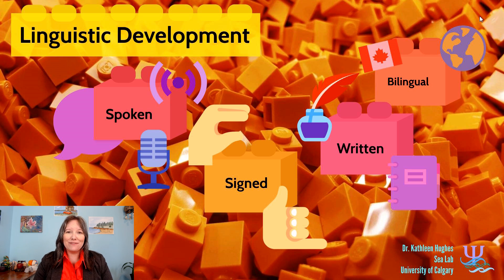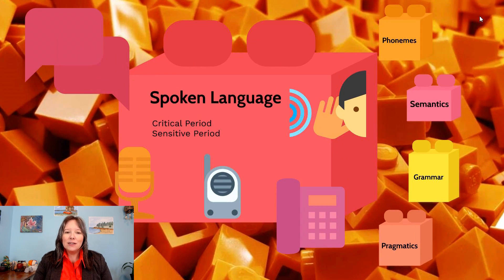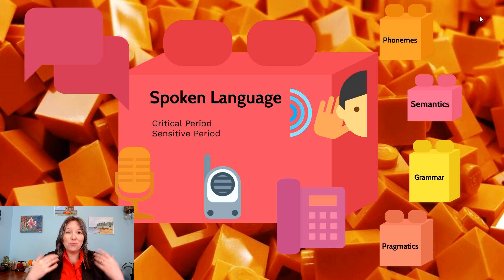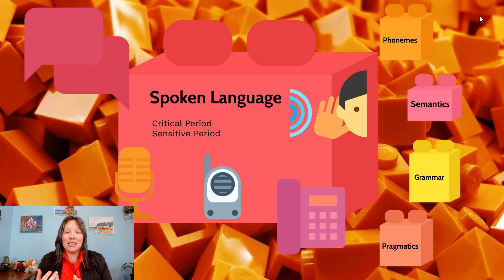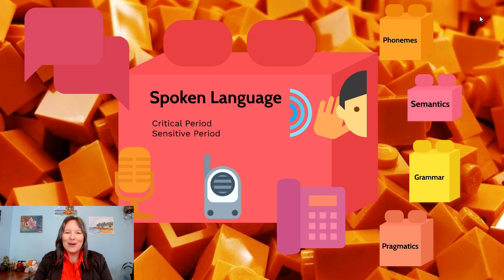For most of us, the first type of language to develop is spoken language, so that's where we're going to start. Spoken language is the language we can hear and speak — the auditorial part of language. This is the part we don't see, but comes through sound waves, telephones, baby monitors, or microphones.